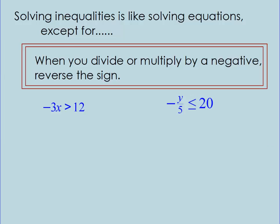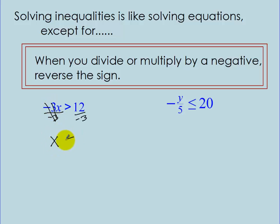Solving inequalities — we write them like equations, except there's one important change: when you divide or multiply by a negative, reverse the sign. Here are two examples. In this case, negative 3x is greater than 12. I want to isolate x, so I divide by negative 3 on both sides. Since I divide by a negative, I must flip the sign to less than negative 4.